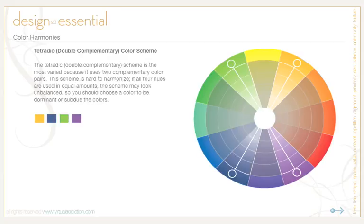The tetradic, or double complementary, color scheme is the most varied as it uses two complementary color pairs. It's hard to harmonize if all four hues are used in equal amounts and can look unbalanced, so choose one dominant color and subdue the rest. Pros: offers more color variety than any other scheme. Cons: it's the most difficult scheme to balance. If it looks unbalanced, desaturate or subdue one or more colors, and avoid using pure colors in equal amounts.